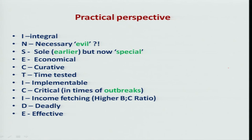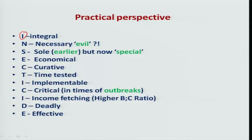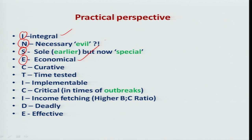To conclude, from the practical perspective in IPM, each letter of the word INSECTICIDE carries a meaning. I refers to integral or integrated component. N refers to insecticide should not become a necessary evil. S refers to it should not be a sole component — it should be a special component in IPM. E refers to economical — the cost-benefit ratio should be more. C is always curative — whenever you see economic damage, you can immediately bring it down using insecticides. T refers to time-tested — with single testing you can immediately include it in the IPM package. I is easily implementable from the farmer's point of view.